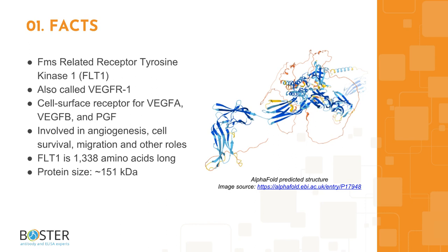FLT1 is 1,338 amino acids long with a molecular weight of about 151 kilodaltons.